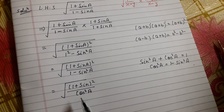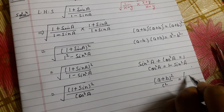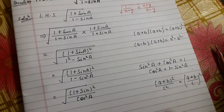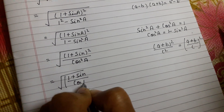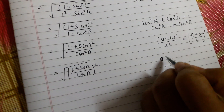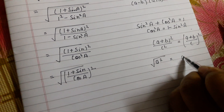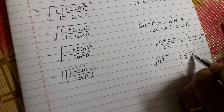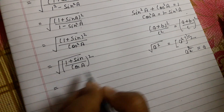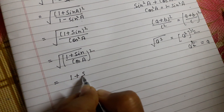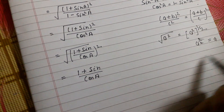The numerator is in the form (a + b)² and the denominator is c², so we can write it as ((a + b) / c)². The expression becomes √(((1 + sinA) / cosA)²). Since the square root and the square cancel — because √(x²) = x, as the root is power 1/2 and 2 × 1/2 = 1 — we get (1 + sinA) / cosA.